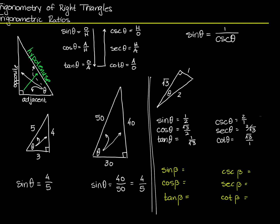Now I want to do another problem, but I'm going to use the same triangle. I'm going to use the other non-right angle and call it beta, and find the sine, cosine, tangent, cotangent, secant, and cosecant of beta. The sine of beta is the side opposite beta divided by the hypotenuse, so I get square root of 3 over 2.